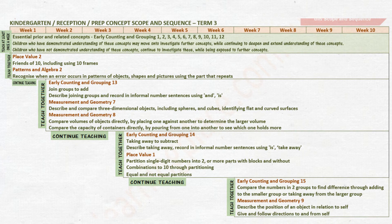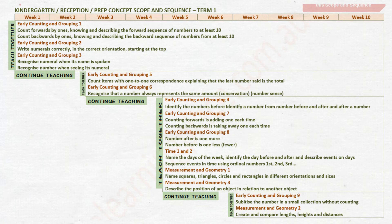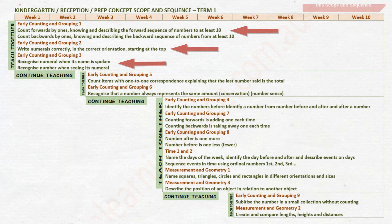Each term presents essential prior concepts from the previous year and terms. Each term's scope and sequence is divided into weeks, with essential prior concepts being taught first and essential related concepts being taught together. For example, counting forwards and backwards, writing numerals and recognising numerals are all taught in the same timeframe, as these are prior knowledge needed to count items and recognise that a number always represents the same amount.